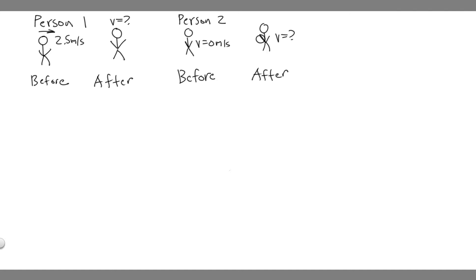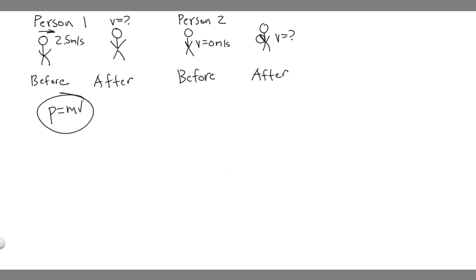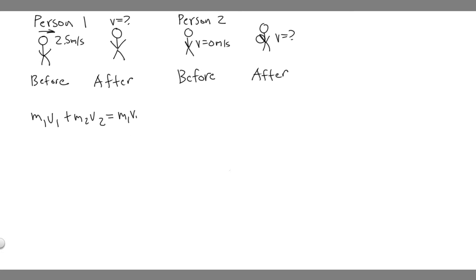To find the velocity of person one, we use the law of conservation of momentum, which tells us the momentum of the objects in the beginning equals the momentum of the objects after. Momentum is p = mv. So if we add up the momentum of two objects — the person and the snowball, which start together and then separate — we get: m1v1 + m2v2 = m1v1_final + m2v2_final.